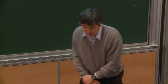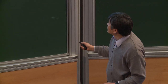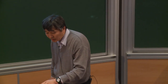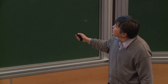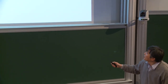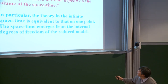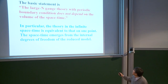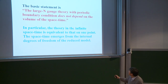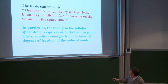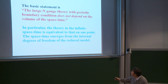Large-N reduction is a typical example of emergence of space-time from matrices. The basic statement is that large-N gauge theory with periodic boundary condition does not depend on the volume of the space-time. In particular, the theory in infinite space-time is equivalent to that on one point. In this sense, the space-time emerges from the internal degrees of freedom of the reduced model.